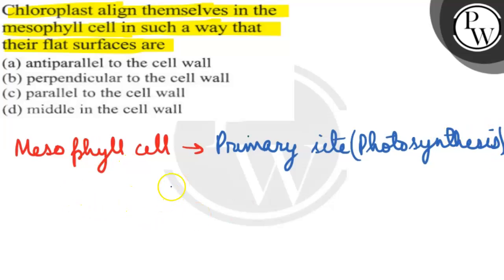So we got to know what is mesophyll cell. In this case, we will see that chloroplast generally align themselves parallel to the cell wall. Chloroplast align parallel to the cell wall.